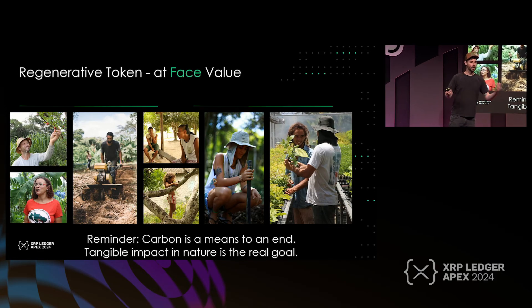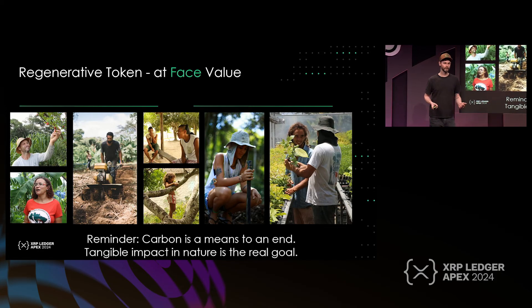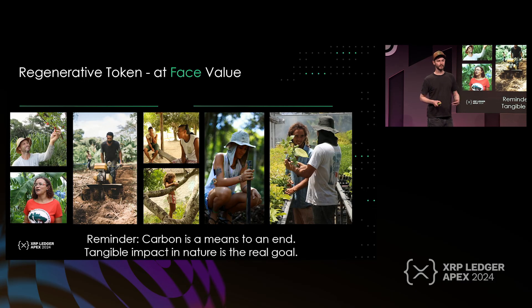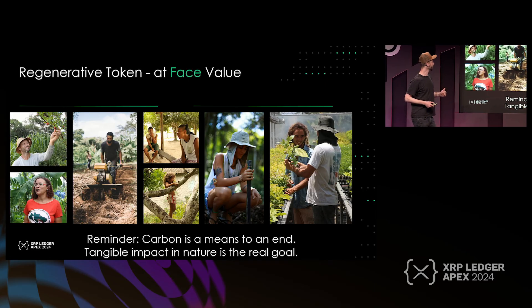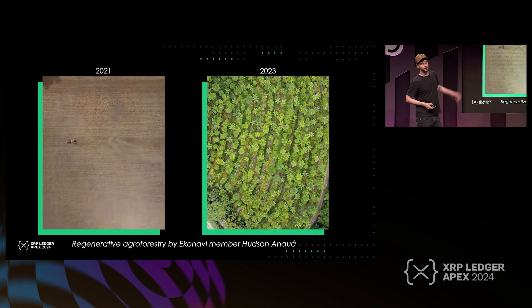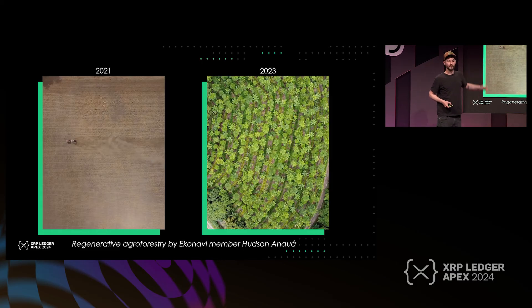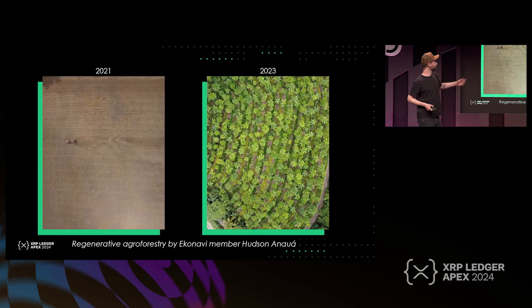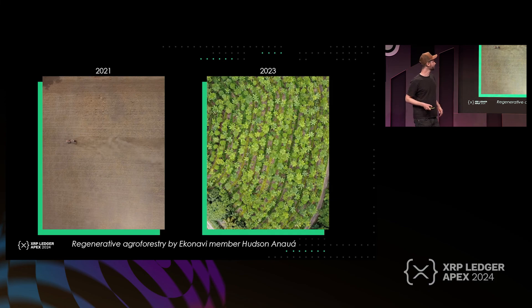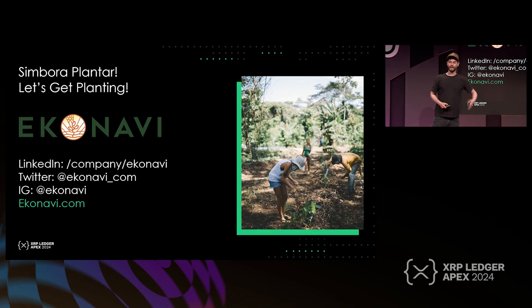We can be happy for capturing thousands of tons of carbon, but what really matters is how that's reflected in the real world — going from simple, degraded, barren land to abundant and biodiverse forest, such as the work done here by a member of our network, agroforestry magician Hootson Anawa. This is what we're focusing on, and if you want to compensate in such a framework and develop a token with us, I'm happy to speak with you later. Thank you very much.